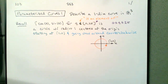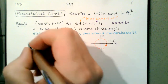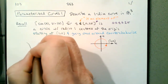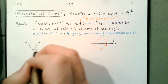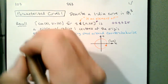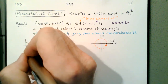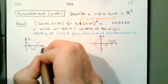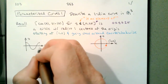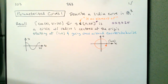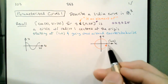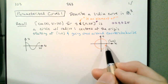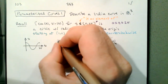X is cosine of t. Once around, cosine of t will start off at one, drop down to negative one, and then come back up to one. And so we can see x starting off at one, dropping down to negative one, and then coming back up to one.